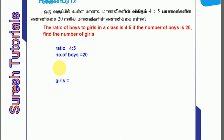Ratio of boys — we will bring it to the boys. So if we calculate the boys, what do we do? 20 divided by 4. So 20 divided by 4, and how many members are there? 5.